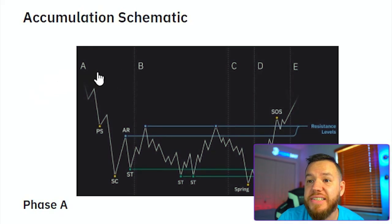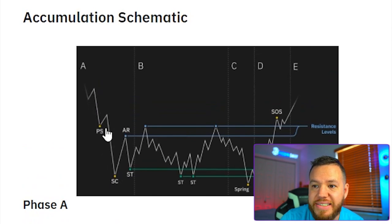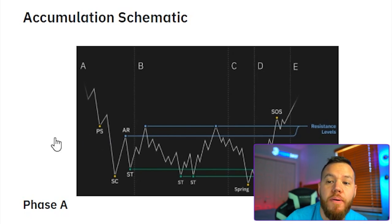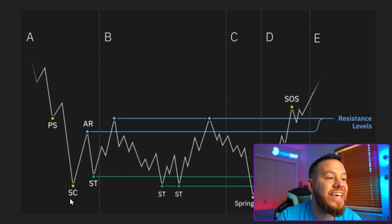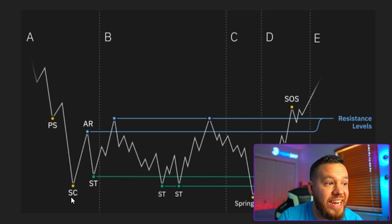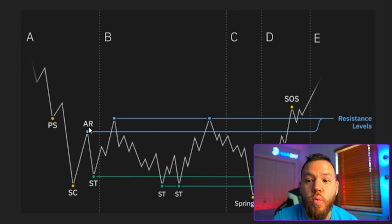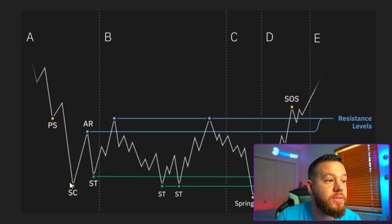First, let's talk about the accumulation schematic. In phase A, this is coming off a sell-off — the selling force decreases and the downtrend starts to slow down. The preliminary support (PS) indicates that some buyers are showing up, but still not enough to stop the downward move. Next is the selling climax, formed by intense selling activity as investors capitulate — often a point of high volatility with big candlesticks and wicks. The strong drop quickly reverts into a bounce or automatic rally (AR). The trading range of an accumulation schematic is defined by the space between the selling climax low and the automatic rally high.